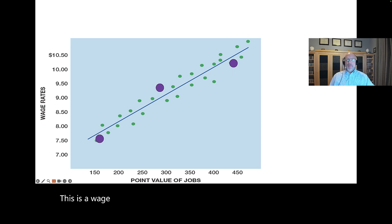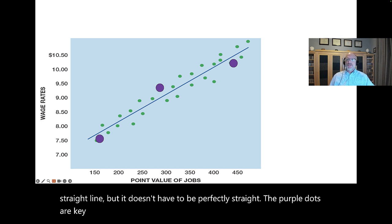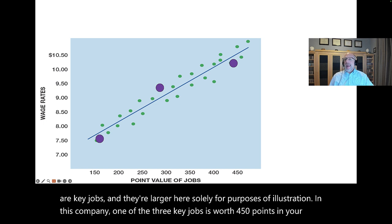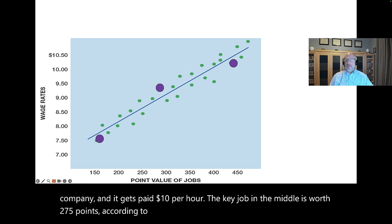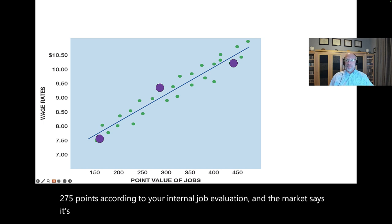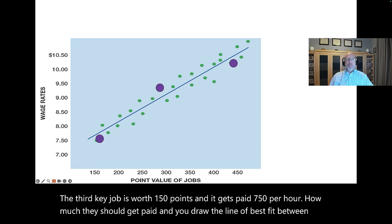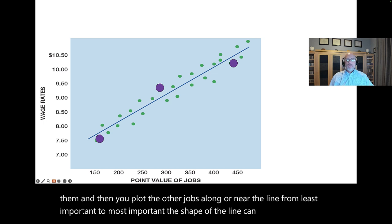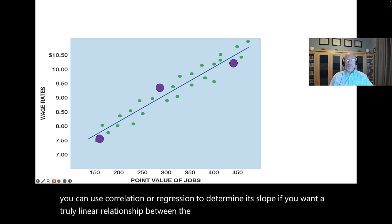This wage curve is based on the point method — it's more of a straight line, but it doesn't have to be perfectly straight. The three key jobs are plotted: one is worth 450 points and gets paid $10 per hour, the middle key job is worth 275 points and the market says it's worth $9.50 per hour, and the third is worth 150 points and gets paid $7.50 per hour. You draw the line of best fit between them, then plot the other jobs along or near the line from least to most important. You can use correlation or regression to determine the slope if you want a truly linear relationship between points and dollars.